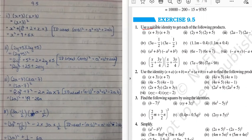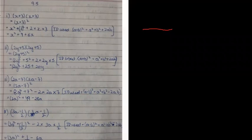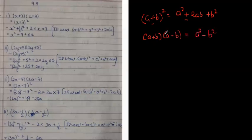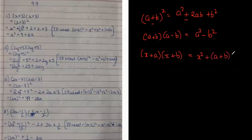In the first question, the task is to use a suitable identity. In the last class, we learnt there are four identities: (a+b)² = a² + 2ab + b²; (a-b)² = a² - 2ab + b²; (a+b)(a-b) = a² - b²; and (x+a)(x+b) = x² + (a+b)x + ab. Do you remember these?